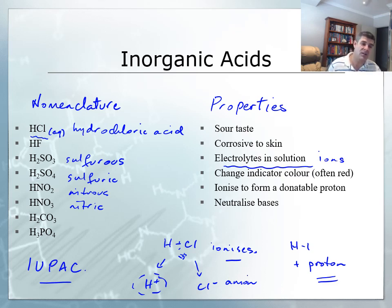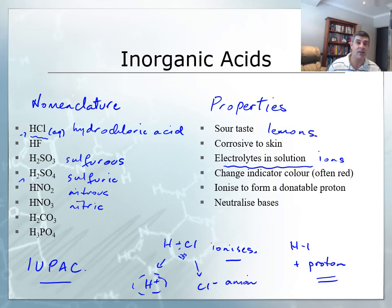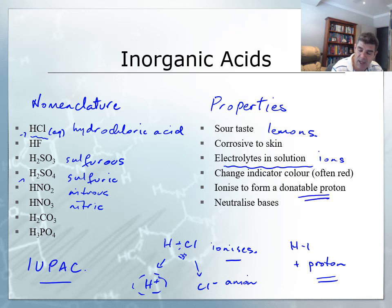As far as the properties of acids are concerned: if you think about lemons, they contain an acidic solution and they have a sour taste. Some of these acids, particularly the very strong acids, are corrosive to the skin. Acids change color in indicators — you've probably most commonly dealt with litmus, which turns red, and universal indicator, which is often a reddish-orange color in acid solutions. They ionize to form a donatable proton — a really important point we'll come back to — and acids neutralize bases.